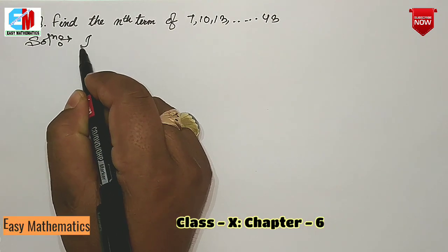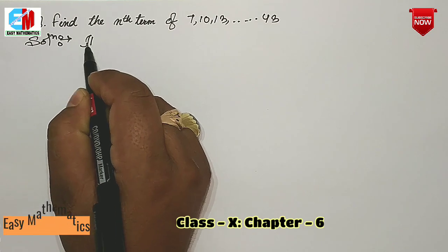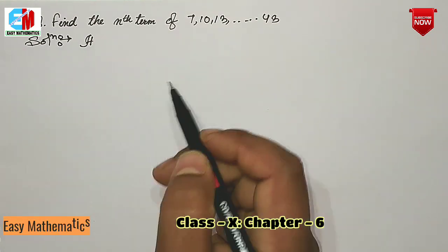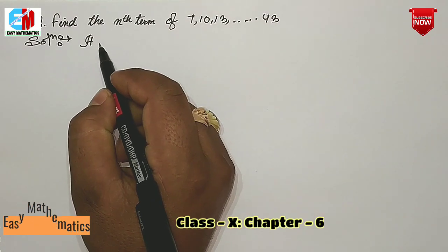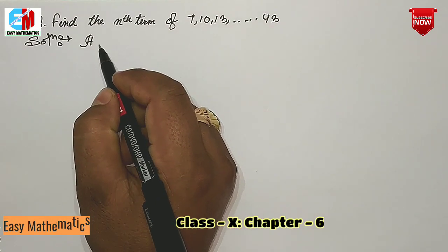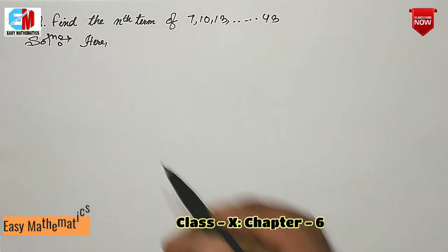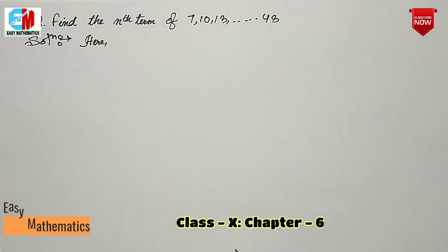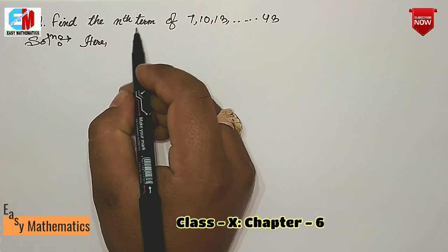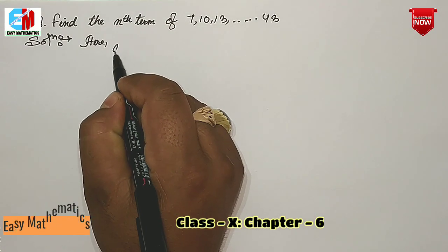The formula at the bottom is: An equals a plus n minus 1 times d. Now I have to work through the next problem.